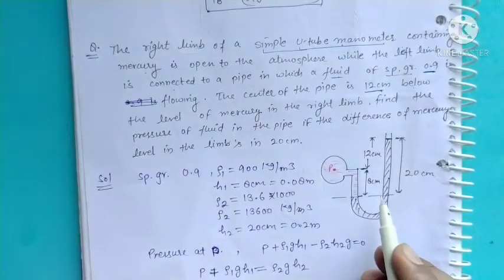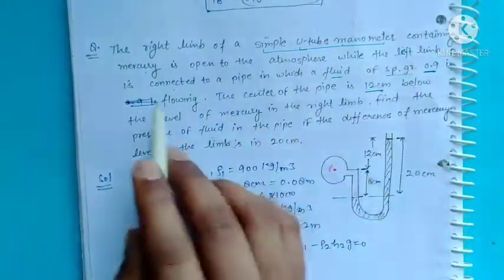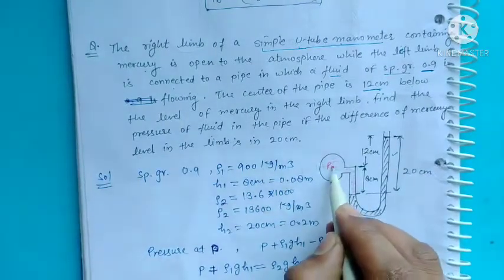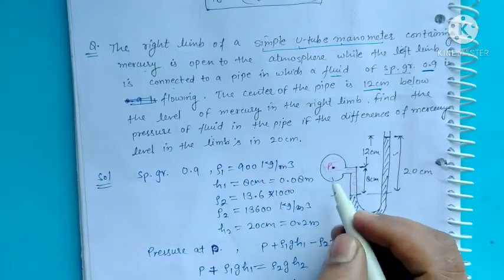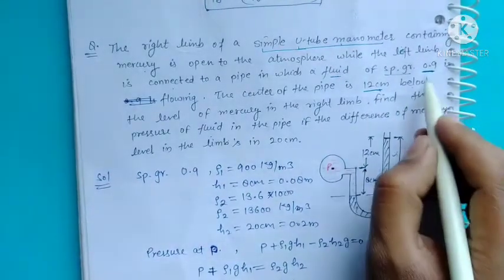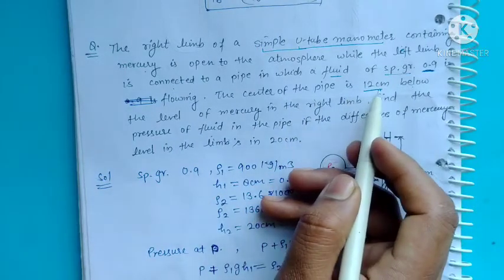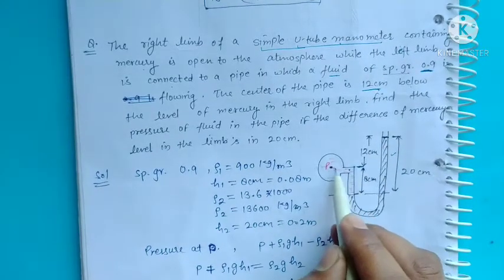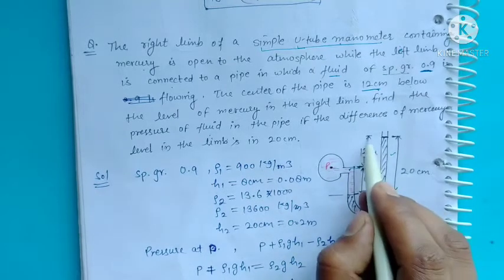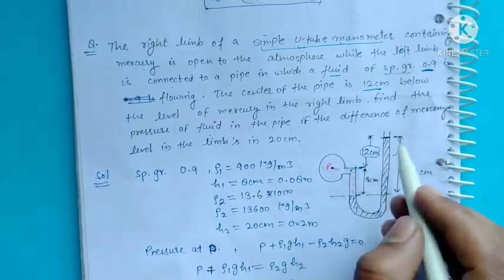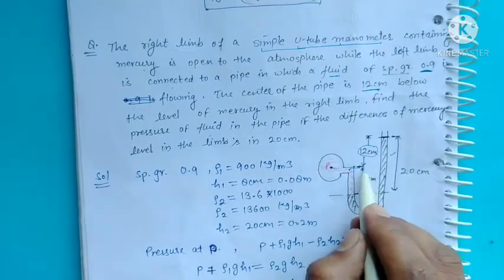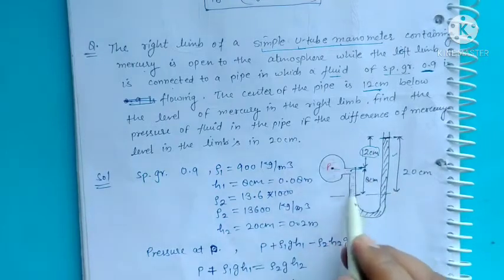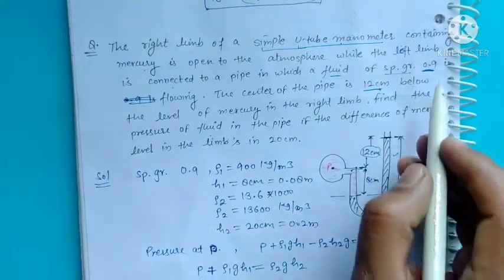इस figure को समझते हैं: एक right limb है जिसमें mercury भरी हुई है, और जो left limb है वो एक fluid pipe से connected है जिसमें हमें pressure निकालना है। उस fluid की specific gravity 0.9 दी हुई है। The center of the pipe is 12 cm below the level of mercury. हमें fluid का pressure find करना है, mercury का नहीं।